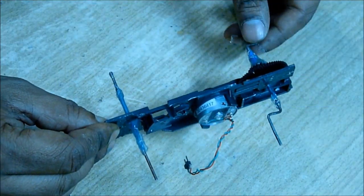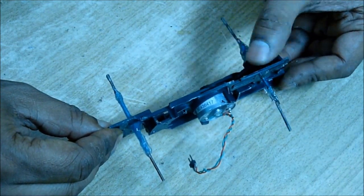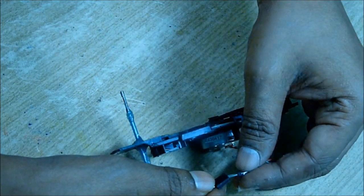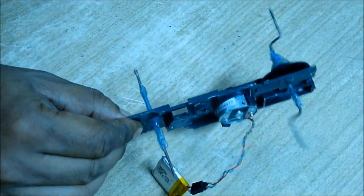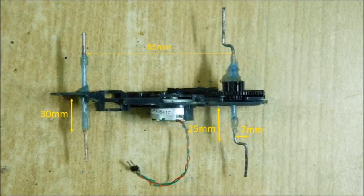Then bend again 90 degrees so that it looks like a bicycle pedal like this. Now if you power it up it will rotate. Here is the approximate measurement of the whole system.